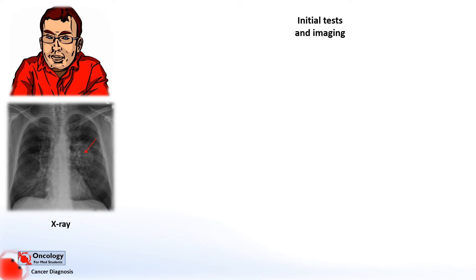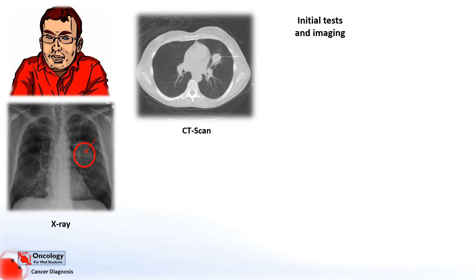Given his smoking history, age, and symptoms, the GP is worried about this man's risk of lung cancer. He asks for a chest x-ray, which shows a suspicious mass. Worried about what he's seen, he refers the patient to a respiratory consultant on the two-week rule, which is an urgent suspected cancer referral system in the UK. In order to better visualise the mass, the respiratory consultant asks for a CT scan.